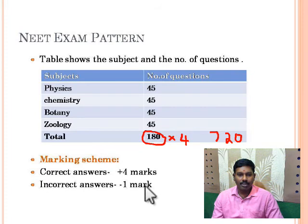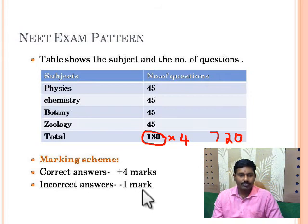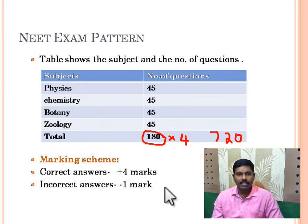If you answer a question wrongly, minus 1 will be the negative marking. So you should answer carefully — otherwise you should skip the question. You should not answer all the questions without knowing at least 50 percent of the answers.